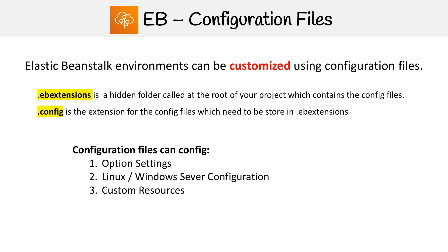What we can change in these configuration files includes the option settings for our initial environment. We can do things very specific to Linux and Windows, and we can also set up custom resources. So if we need other AWS services to integrate, that's what we can do there.